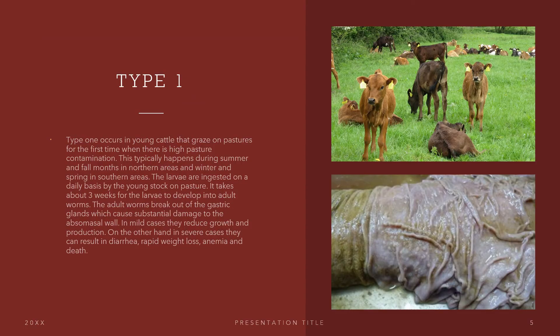Now let's talk about the different types of Ostertagia. First, we have Type 1. This stage is not as severe, but it does occur in young cattle that graze on pastures for the first time when there is high pasture contamination. This typically happens during summer and fall months in northern areas and winter and spring in southern areas. The larvae are ingested on a daily basis by the young stock on pasture. It takes about three weeks for the larvae to develop into adult worms. The adult worms break out of the gastric glands, which cause substantial damage to the abomasal wall.